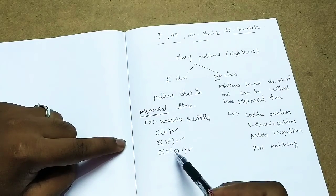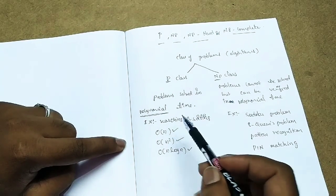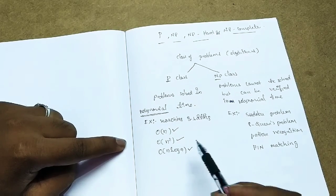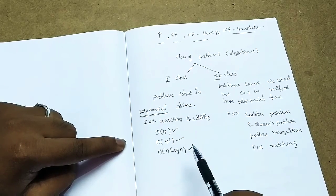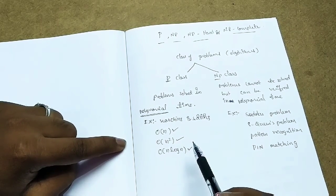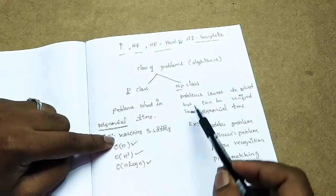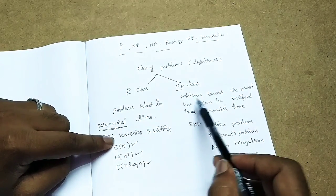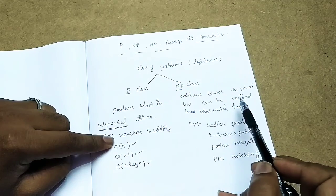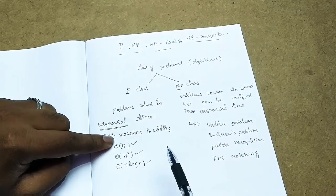If there is polynomial time, we can execute in polynomial time and the problems are very fast to run. NP class: problems cannot be solved in polynomial time, but can be verified in polynomial time.